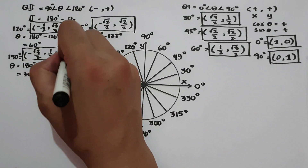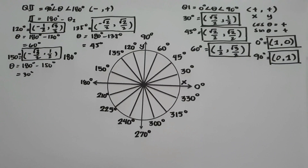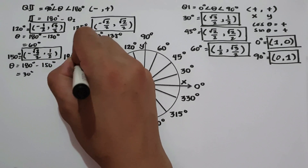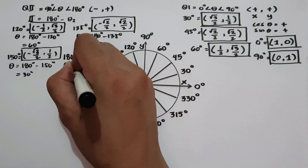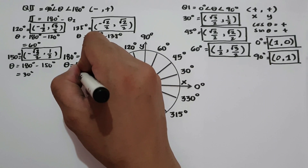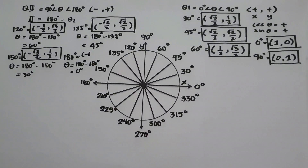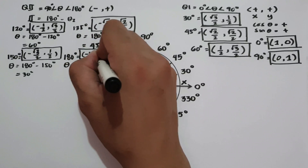How about 180 degrees? To find the coordinates of 180 degrees, let us determine the reference angle. The reference angle is 180 degrees minus 180, which is 0 degrees. Cosine 0 in quadrant 2 is negative 1, and sine 0 in quadrant 2 is 0. Therefore, this will be the coordinates of 180 degrees.